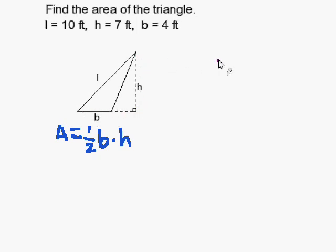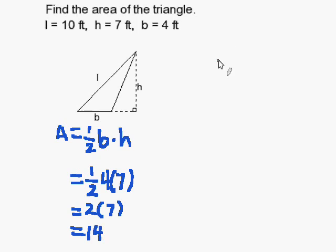So, once we have those things, we can go ahead and start substituting in values. I have one-half, 4 times 7. If I multiply that out, I get 2 times 7, which is 14.